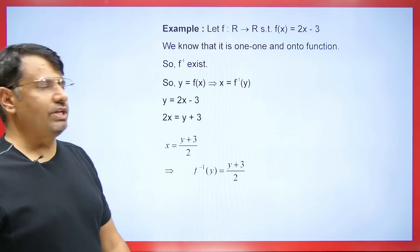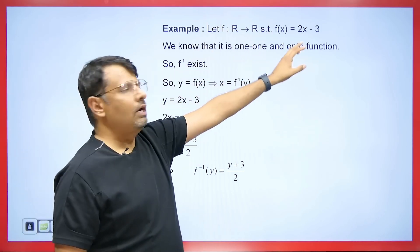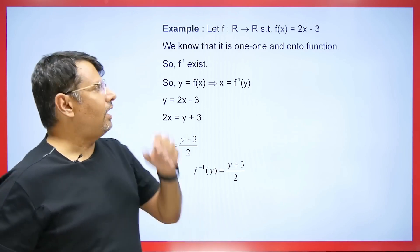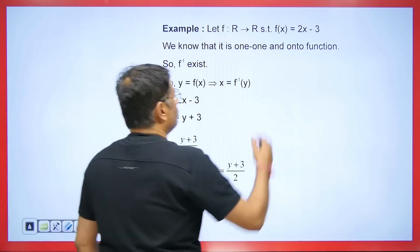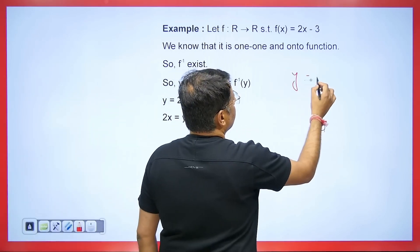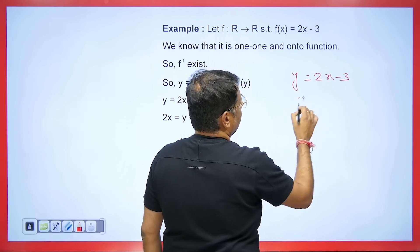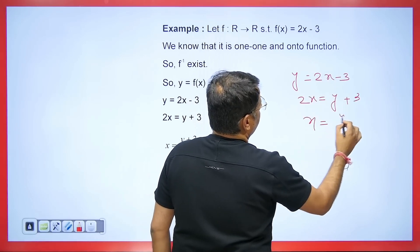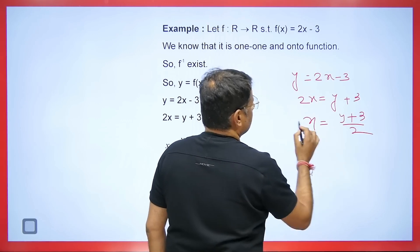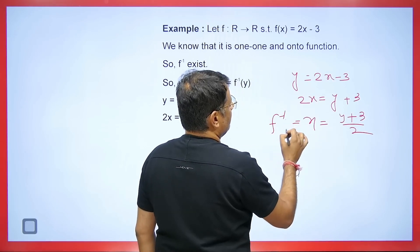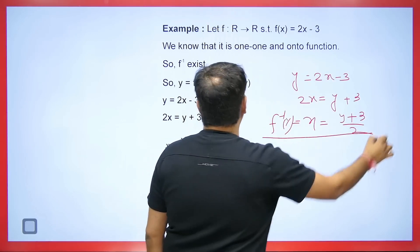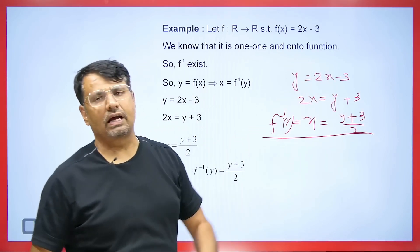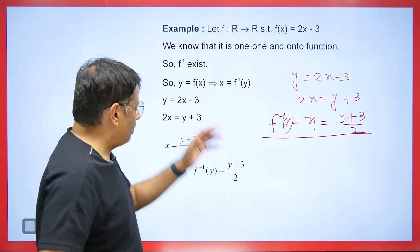Let's take an example. We know that F: ℝ → ℝ, F(x) = 2x − 3. This function is one-to-one and onto. To find its inverse, take F(x) as Y. Then Y = 2x − 3, so 2x = Y + 3, giving x = (Y + 3)/2. Therefore F⁻¹(Y) = (Y + 3)/2. This means its inverse exists and we can find it using this method.